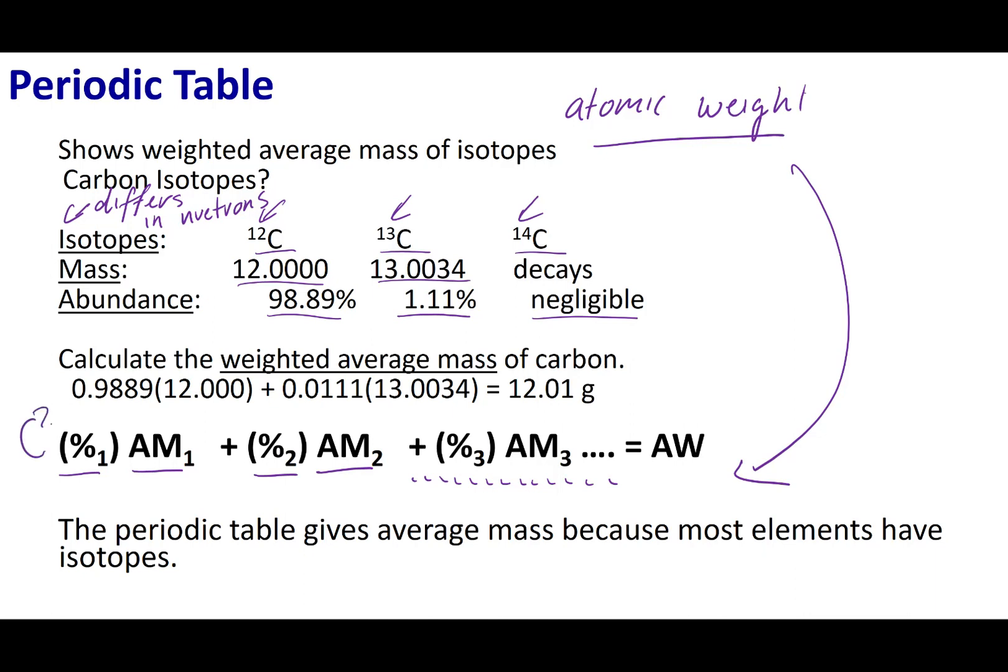For carbon, you guys can see I take that 98.89%, turn it into a decimal, and then I have its atomic weight. I take the 1% that I have of carbon-13, and then I take its atomic weight, and then I go ahead and do this calculation, and this number is the number that appears on the periodic table. The periodic table has the atomic weight, which is based on the isotopic abundance of each isotope of that particular element.